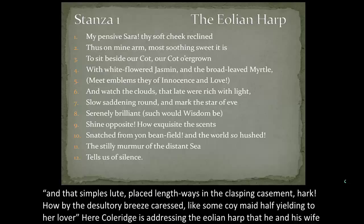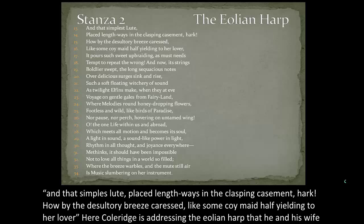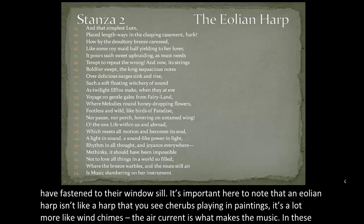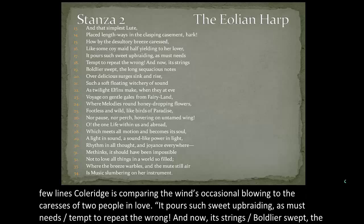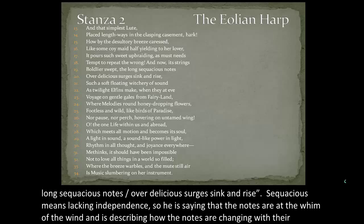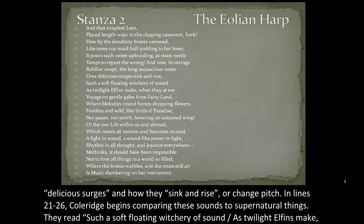Here Coleridge is addressing the Aeolian harp that he and his wife have fastened to their windowsill. An Aeolian harp isn't like a traditional harp — it's a lot more like wind chimes, where the air current makes the music. In these lines, Coleridge compares the wind's occasional blowing to the caresses of two people in love. He describes the notes as 'sequacious' — meaning lacking independence — at the whim of the wind, and describes how the notes change with their delicious surges, sinking and rising in pitch.